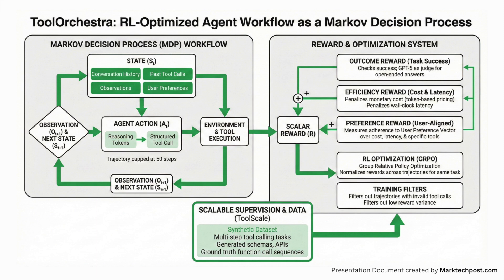The policy is optimized with Group Relative Policy Optimization (GRPO), which normalizes rewards across trajectories for the same task. Training filters out trajectories with invalid tool calls or low reward variants, while ToolScale — a synthetic dataset of multi-step tool calling tasks with generated schemas, APIs, and ground truth function call sequences — provides scalable supervision for this reinforcement learning setup.